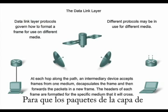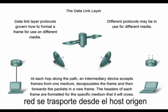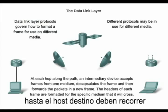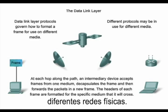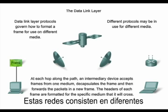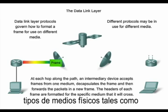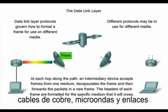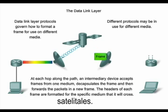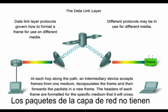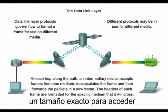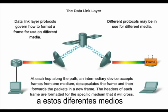For network layer packets to be transported from source host to destination host, they must traverse different physical networks. These networks can consist of different types of physical media, such as copper wires, microwaves, optical fibers, and satellite links. Network layer packets do not have a way to directly access these different media.